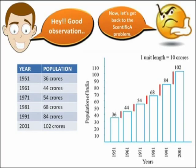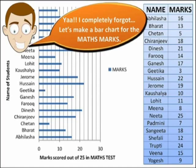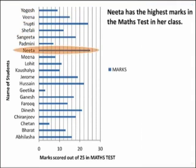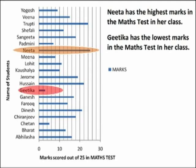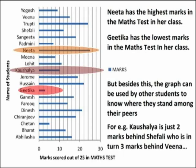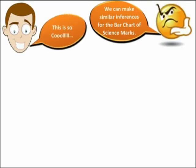Now let's get back to our original problem and make a bar chart for the maths marks. From the bar graph, we can easily infer that Meera has the highest marks in the maths test in the class, and Githika has the lowest marks. Besides these obvious inferences, students can see where they stand among their peers. For example, Kavita is just two marks behind Shefali, who is in turn three marks behind Veena. We can make similar inferences for the bar chart of science marks.